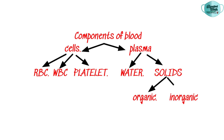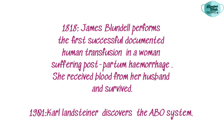The composition of blood can be divided into two sections: the cellular part, which constitutes around 45%, and the plasma part, which constitutes around 55%. The cellular part contains erythrocytes, leukocytes, and thrombocytes. The plasma contains water and solids; among the solids there are inorganic and organic substances — inorganic substances constitute 1% and organic substances constitute around 8%.